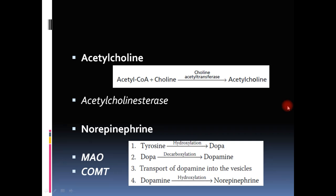Let us study in more detail about these neurotransmitters. Acetylcholine and norepinephrine are both synthesized in the terminal buttons of the neuron. They are small neurotransmitters and do not need to be synthesized in the cell body — they are synthesized with the help of enzymes at the terminal button itself. Acetylcholine is synthesized from acetyl coenzyme A and choline in the presence of the enzyme choline acetyltransferase.